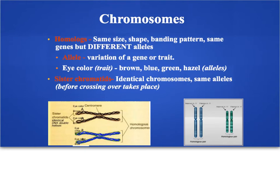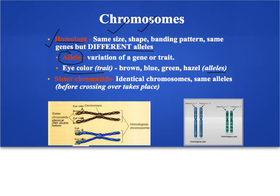This slide reiterates the vocabulary we've been going over. Homologues is just another word for homologous chromosomes — the two chromosomes in a pair. They look exactly the same: same size, same shape, same genes, but different versions of those genes. Allele is the fancy vocabulary word for a version of a gene; for example, eye color is the gene and brown, blue, green, or hazel are the alleles. Also, don't confuse sister chromatids with homologous chromosomes. Sister chromatids are the two identical copies of a chromosome made during S phase, whereas homologous chromosomes are the two versions of the same chromosome inherited from your mother and your father.